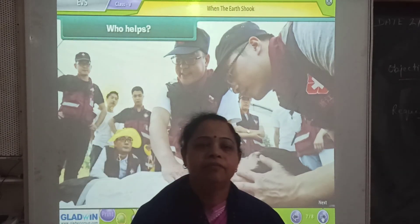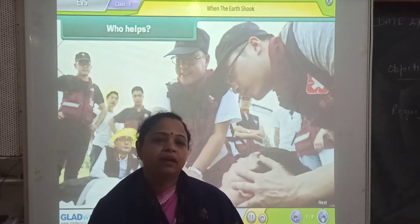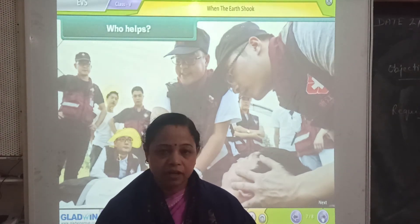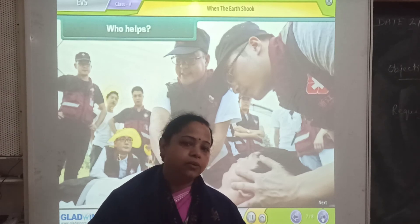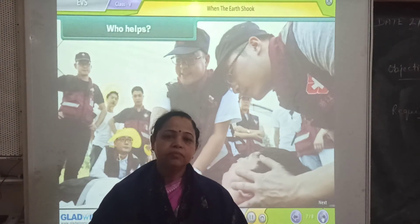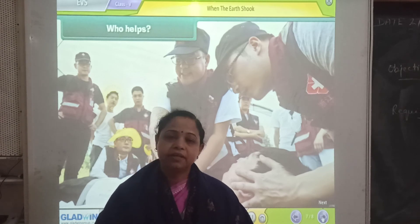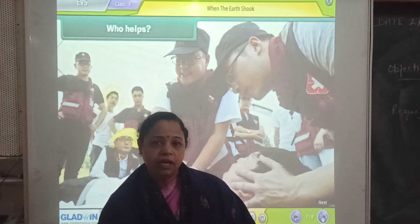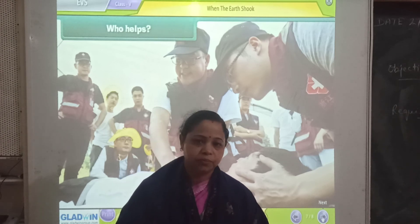We have learnt from this chapter that there are many types of disasters like flood, drought and famine. In such times, the government and many other private agencies extend their help to the people. Take care. Thank you.